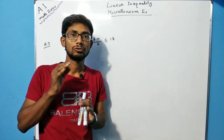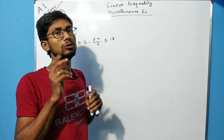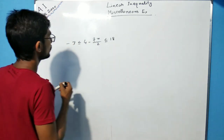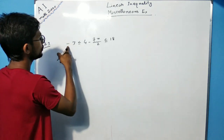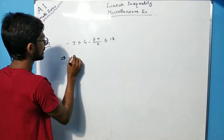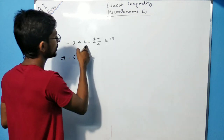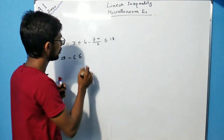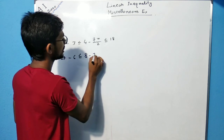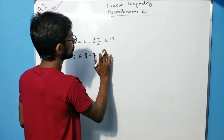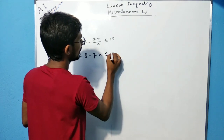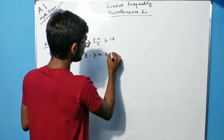We will multiply throughout the whole inequality with 2. So if we multiply by 2 throughout the whole equation, then we get: minus 6 is less than or equals to — 4 into 2 is 8, minus 7x — less than or equals to 18 times 2, which is 36.